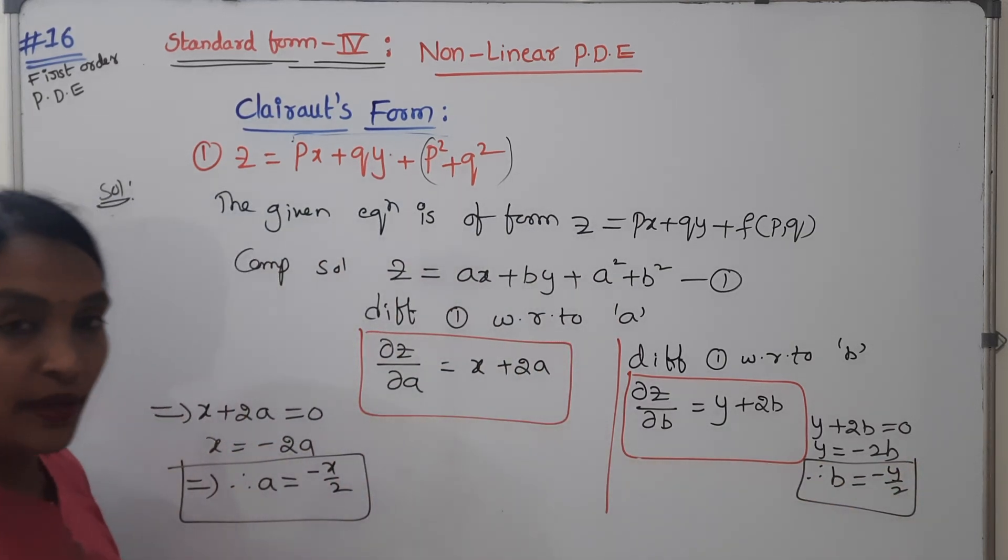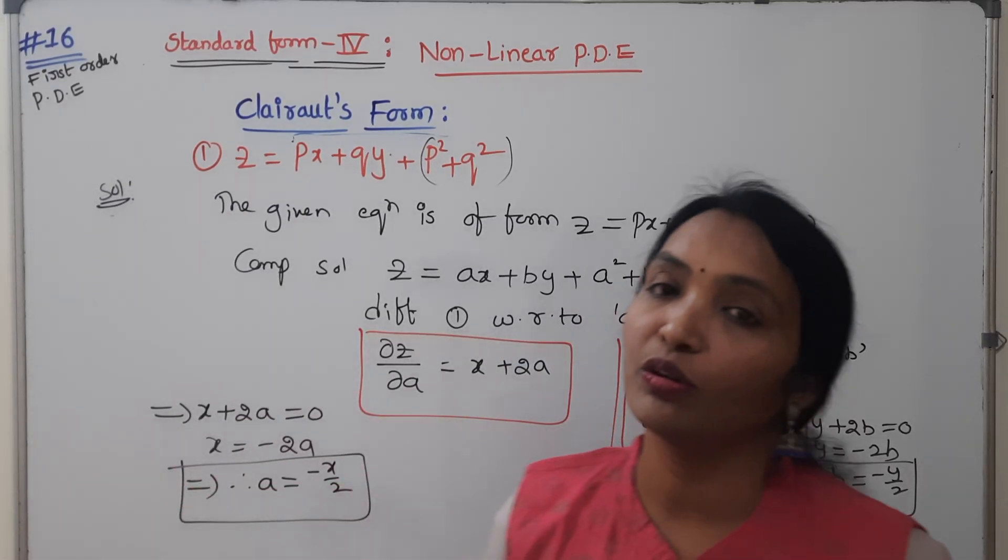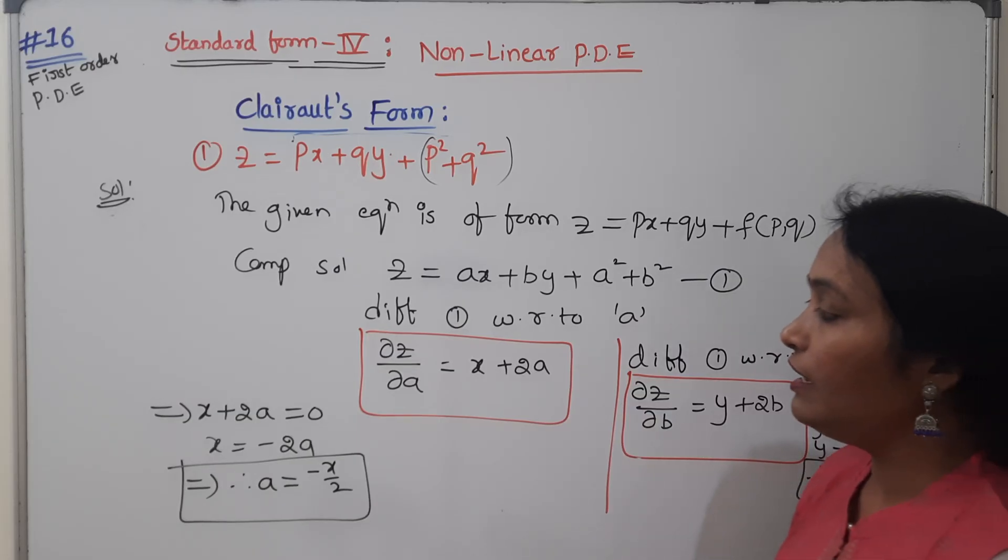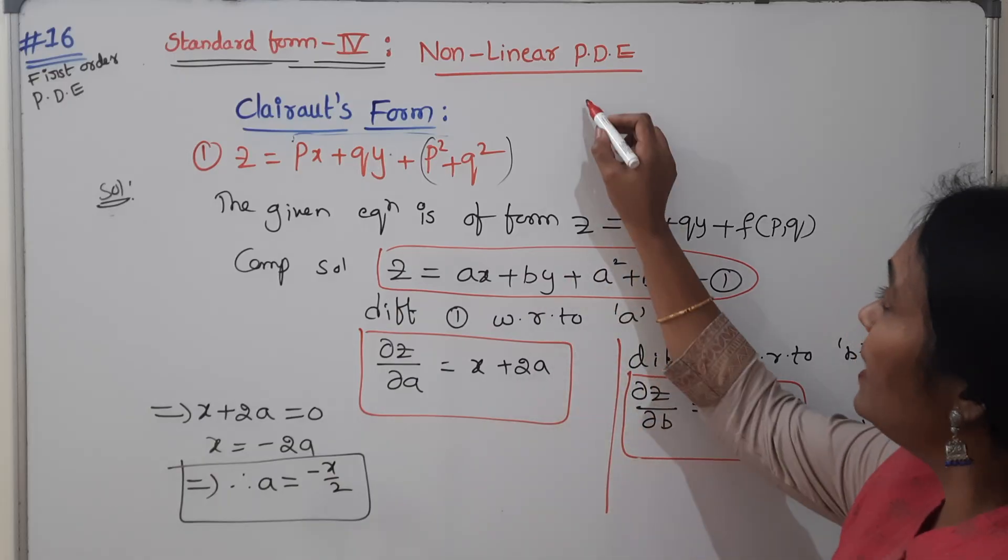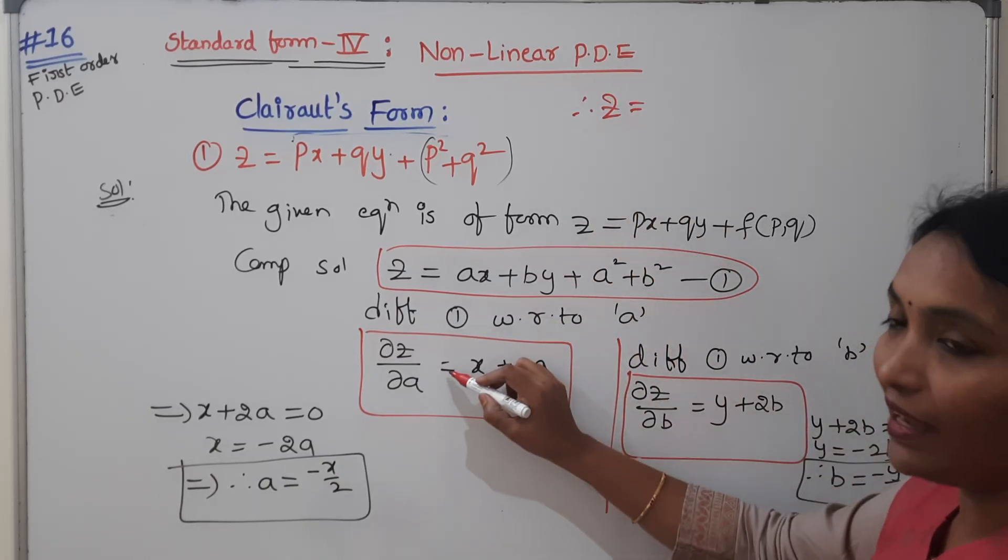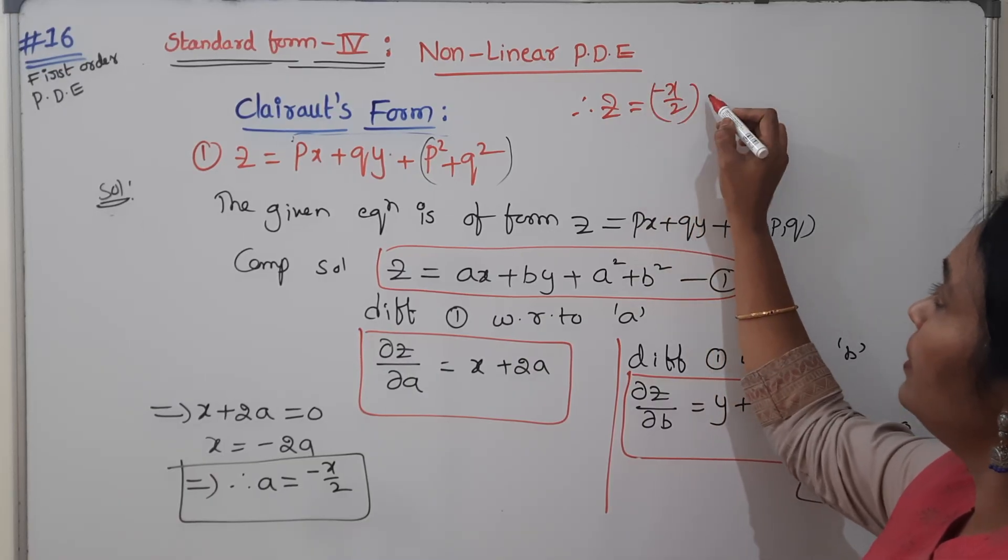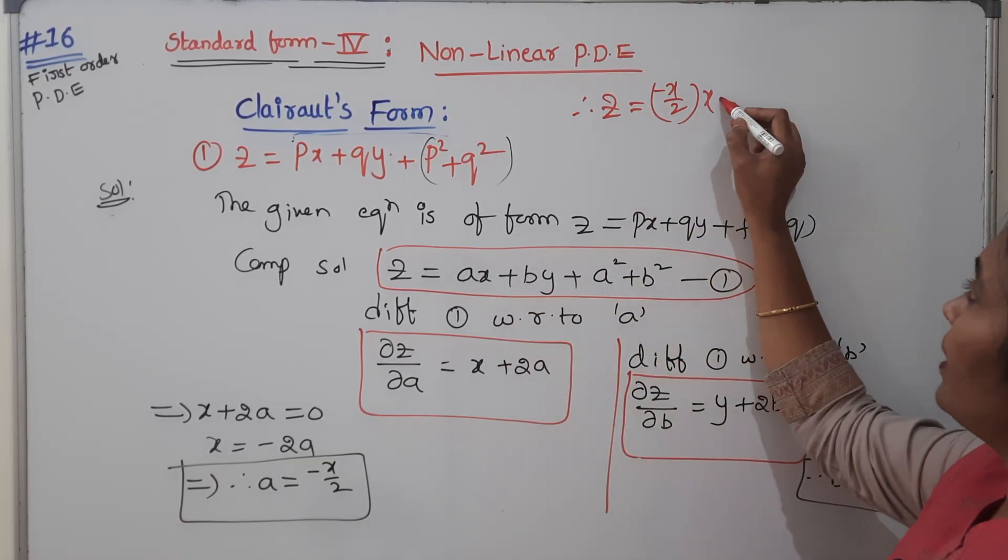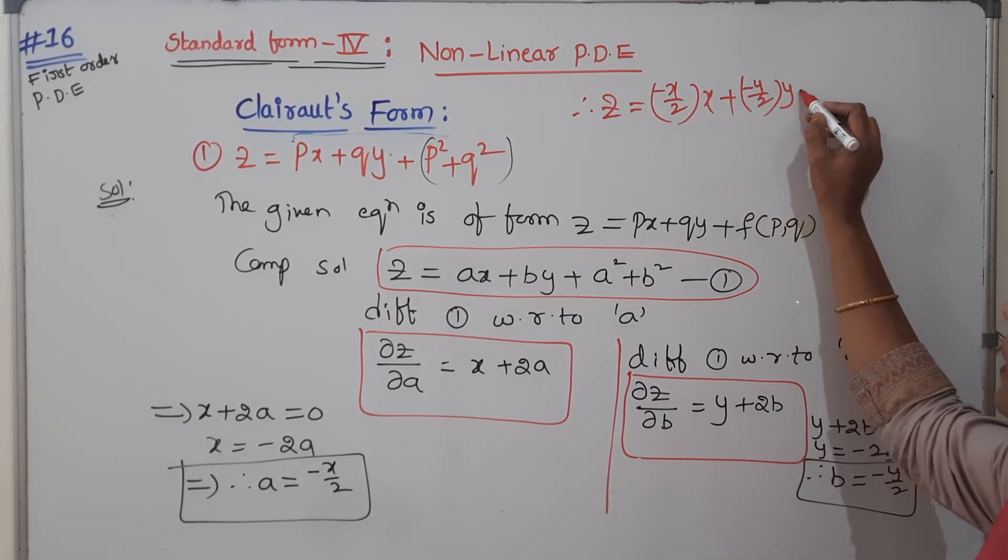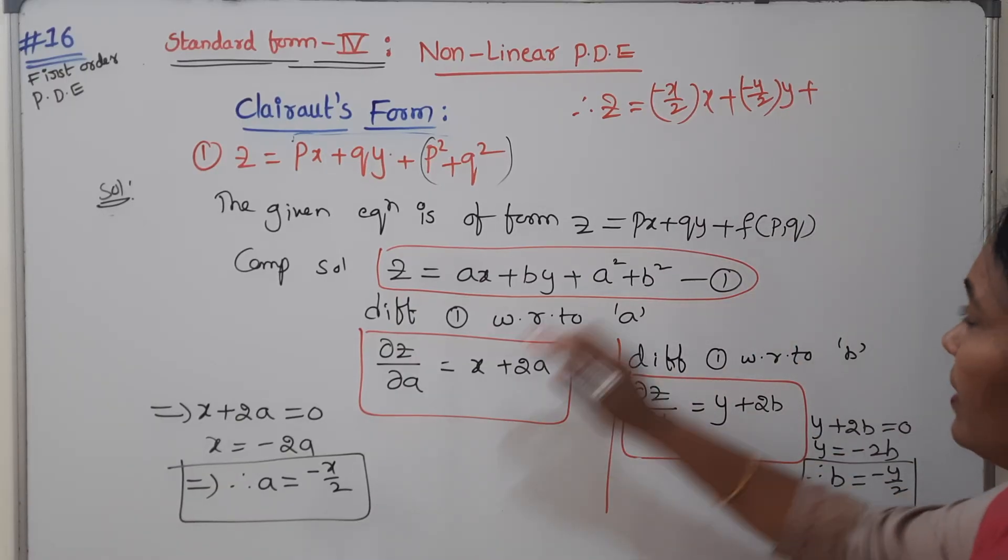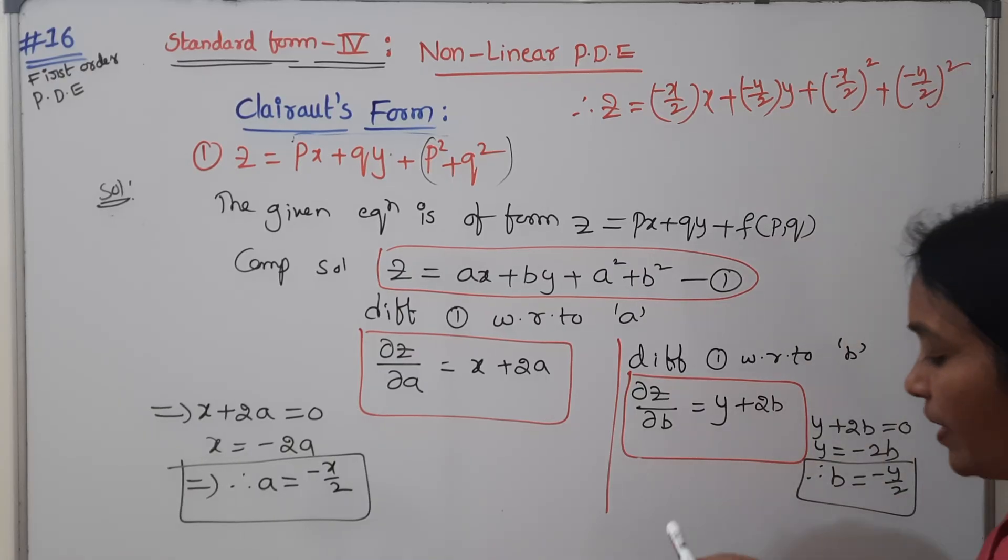Now I got A and B. Put those values in our general solution. The complete general solution is: Z equals A which is minus X by 2 times X, plus B which is minus Y by 2 times Y, plus A square which is minus X by 2 whole square, plus B square minus Y by 2 whole square.